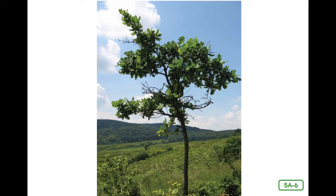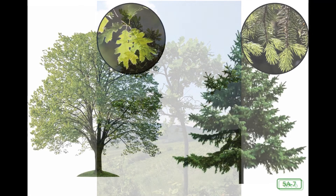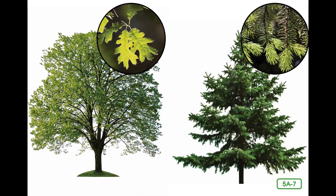Once a tree is considered mature, it may flower and produce fruits, nuts, or cones. Some trees simply produce seeds. There are two types of trees: deciduous and evergreen. Deciduous trees shed their leaves. Deciduous trees tend to have wide, flat leaves, whereas evergreen tree leaves tend to be narrow and thin like needles.